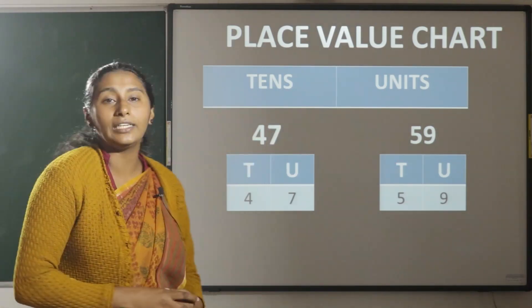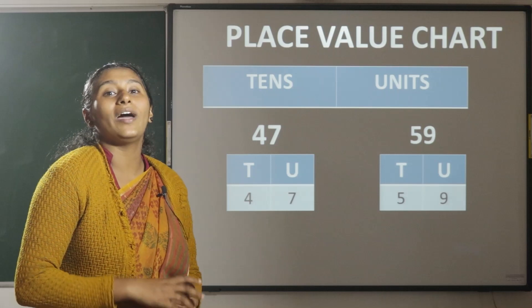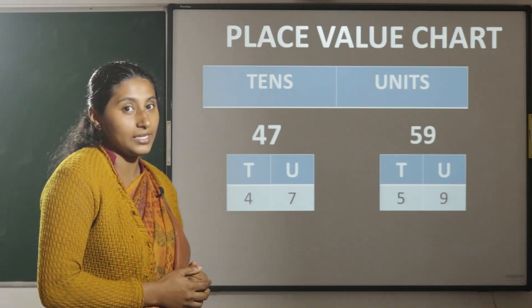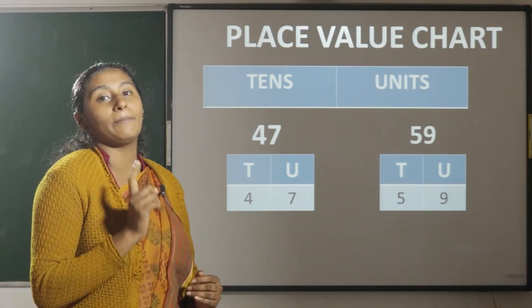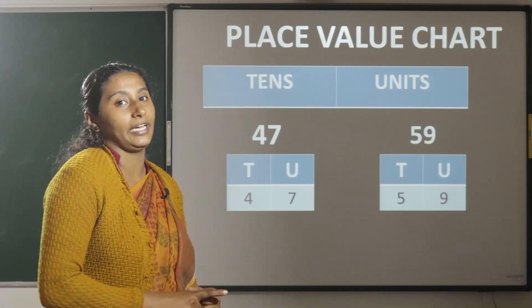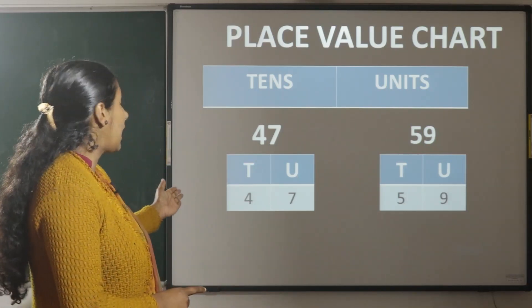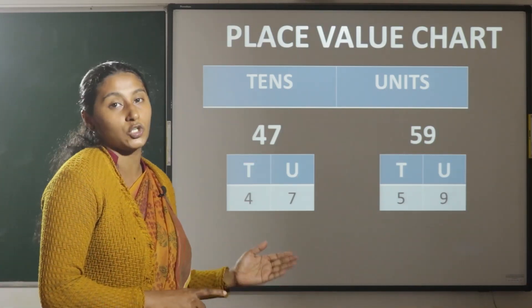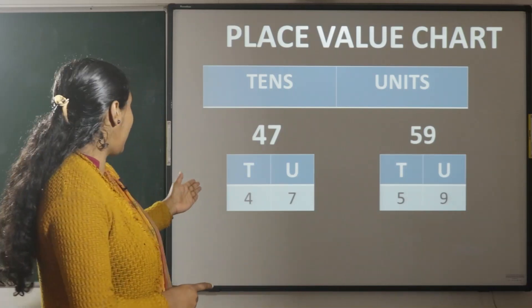How to write the numbers in place value chart? When we have two-digit numbers, the first number should be written in tens place and the last number should be written in the unit place.